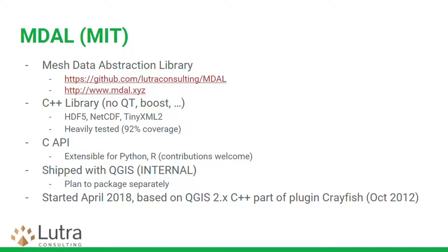MDAL was started as an MIT-licensed library so it can be used in different projects, not just QGIS. It's really a wrapper around your data — it doesn't include any algorithms or preprocessing. It's C++ without heavy dependencies like Qt or Boost, and it has a C API so you can write extensions for different languages. Contributions are welcome. It's currently shipped with QGIS, but we want to package it separately for future releases. We're also discussing moving it to the OSGeo incubator project, which we hope to make happen in the upcoming months.